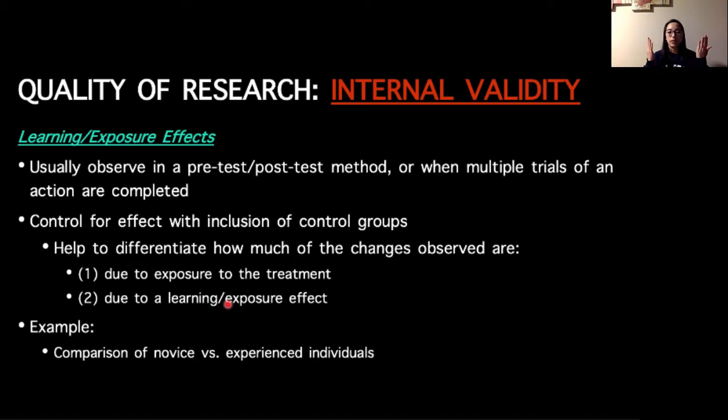If we wanted to look at the changes observed in novice performers, typically, if you remember what the power law practice is from KIN 312, novice performers make very large errors and a higher quantity of errors than more experienced individuals who make smaller errors and a lower quantity of errors. So the room for improvement is a lot larger for a novice performer than it is for an experienced individual. If we give both novice and experienced performers the same intervention, we most likely are going to expect that novice performers will have a higher rate of improvement than the experienced people just because they have more errors to correct or further to go. In that case, the differences then between novice and experienced individuals are partially due to learning or exposure effects.